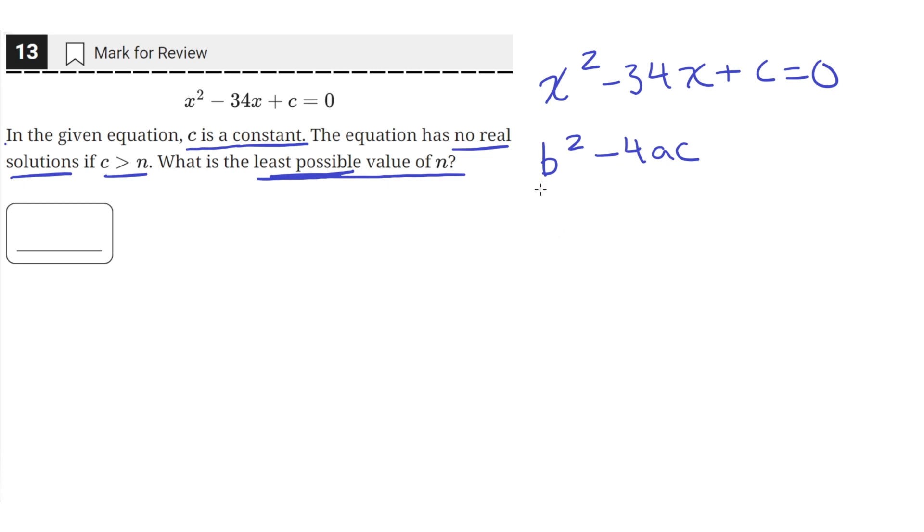So in this case, the value of b is negative 34, since it's the coefficient of the x term. a is equal to 1, since it's the coefficient of the x squared term. There's an invisible 1 here.